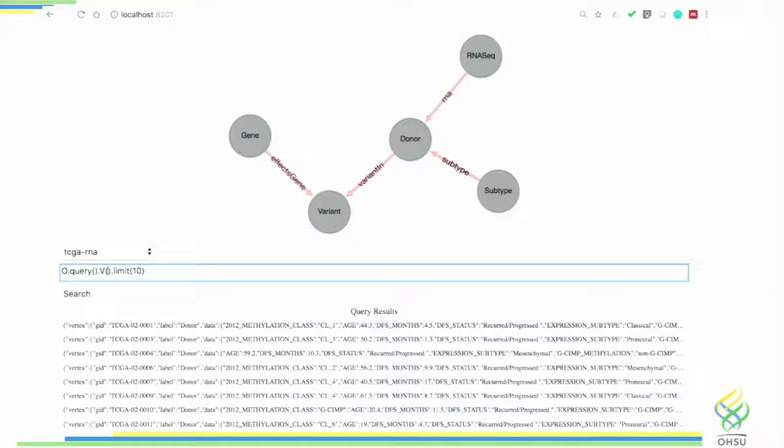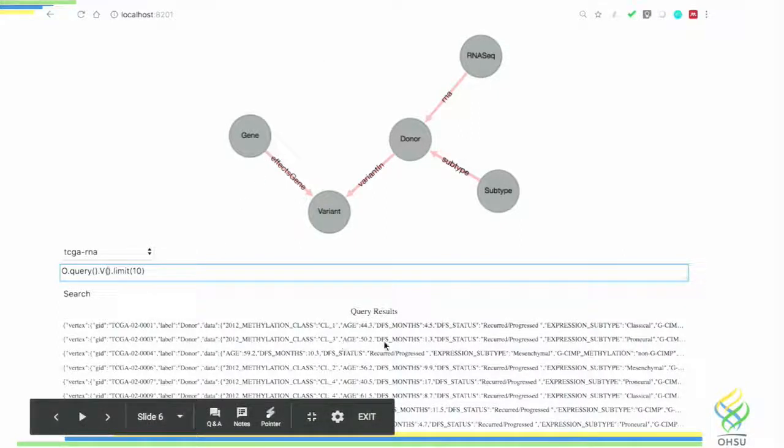This is what the graph ends up looking like in our viewer. As you can see here, each vertex is a, these are all the donor vertices and these are all the attributes attached to all of them. So if you want to search by age, these are all fields that are stored on these graphs.